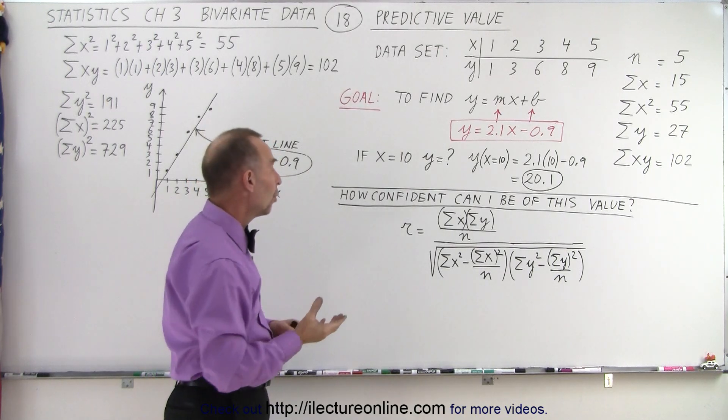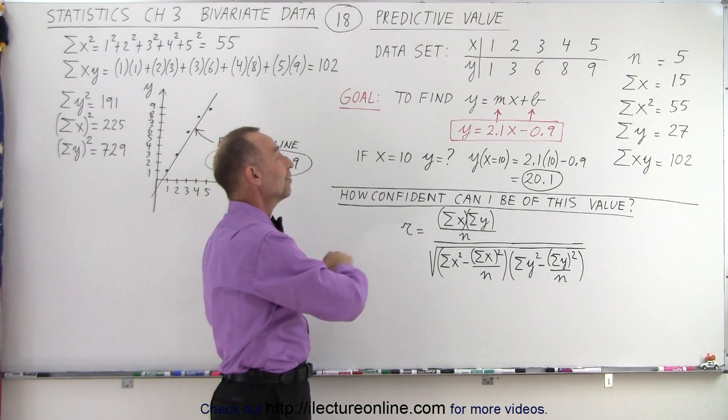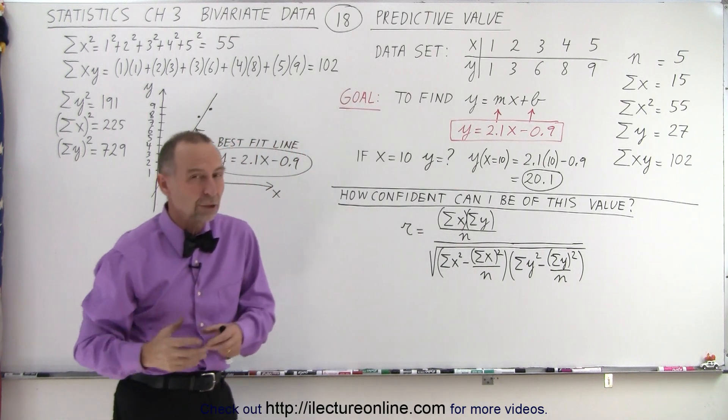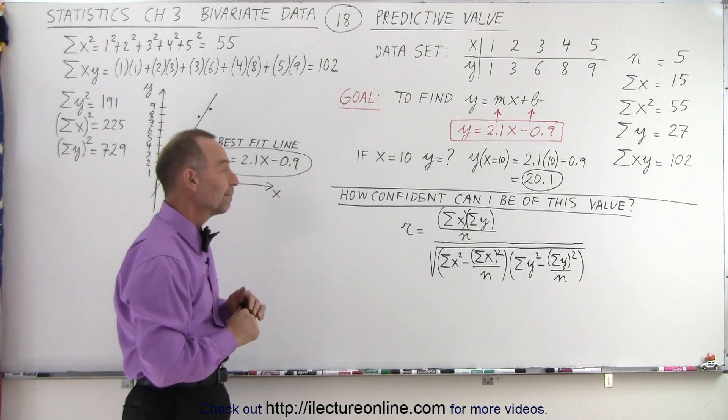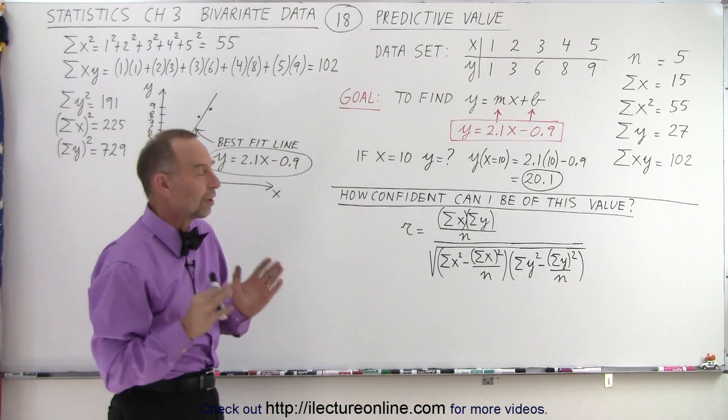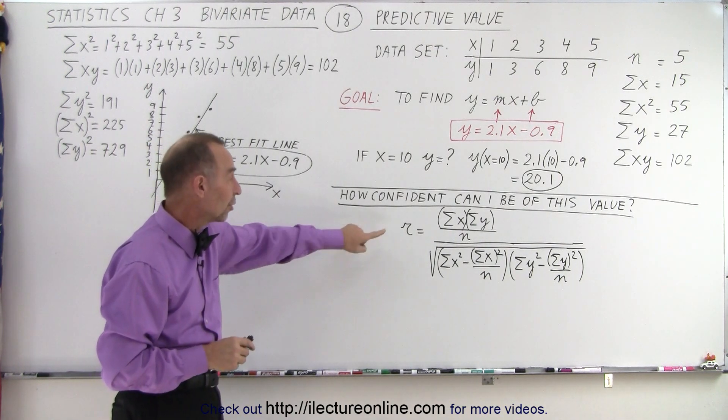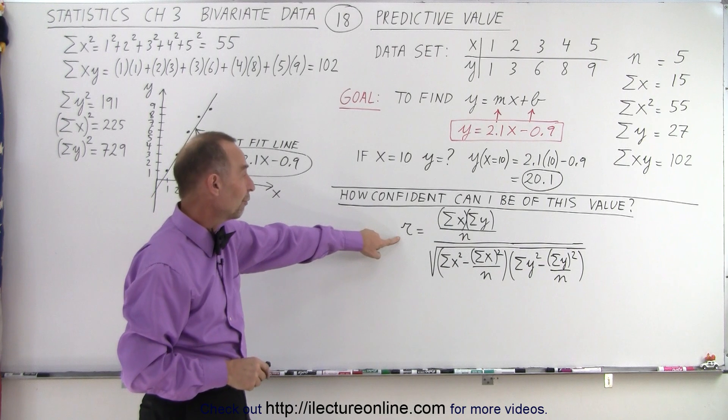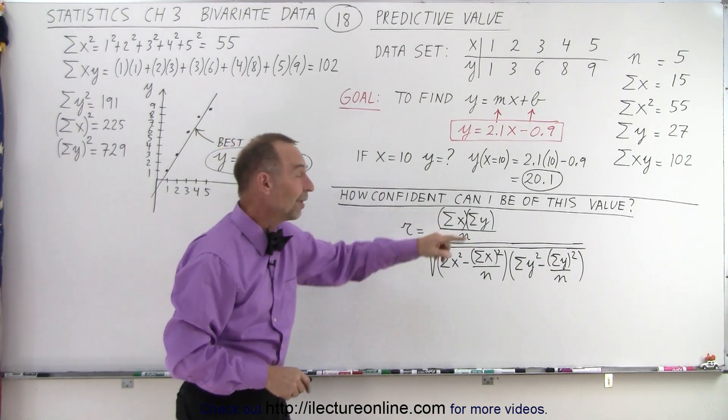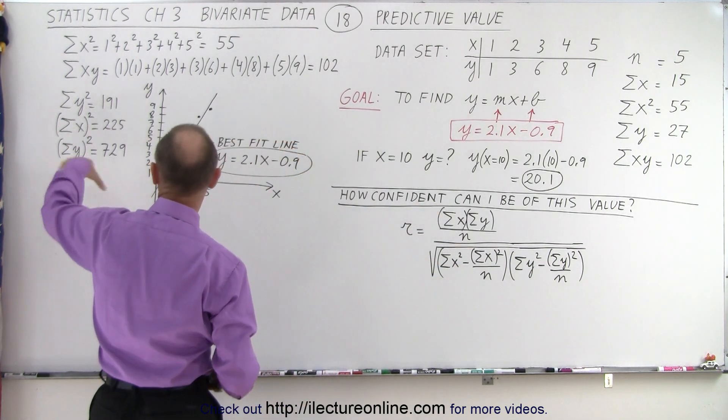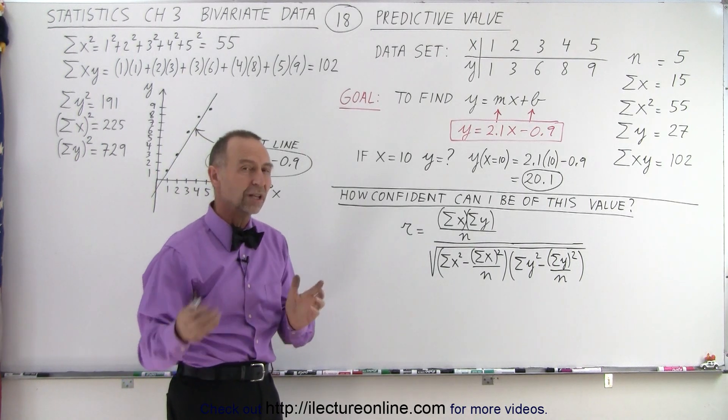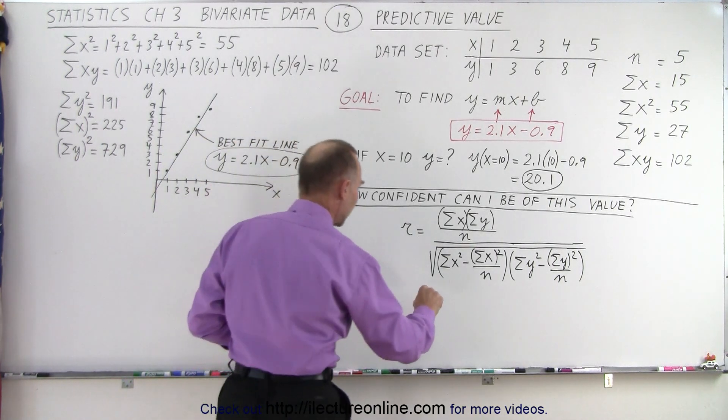Now the question may be, what is the confidence that we have that this value is nearly correct or very close to being correct? Well, we can find the regression coefficient. And we did that a few videos ago, so here's the equation again that the regression coefficient can be found using these values. And just for our benefit, I calculated, pre-calculated some of these values already. So let's plug them in and see what we get.